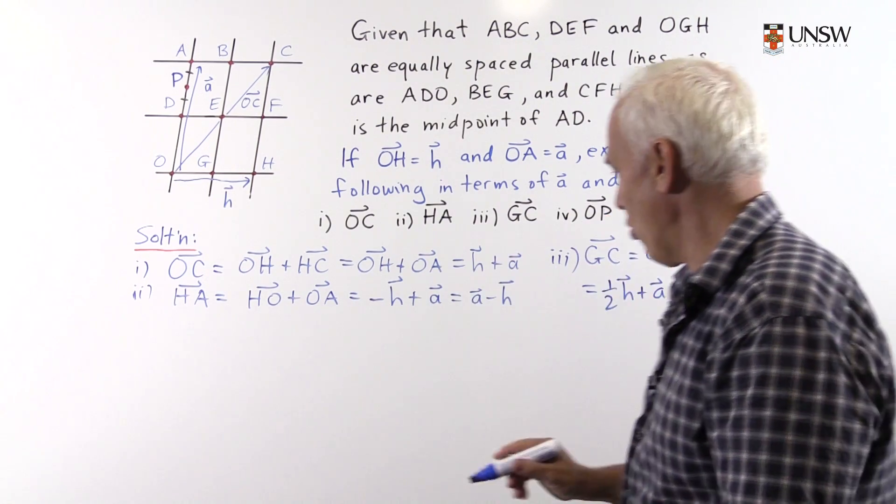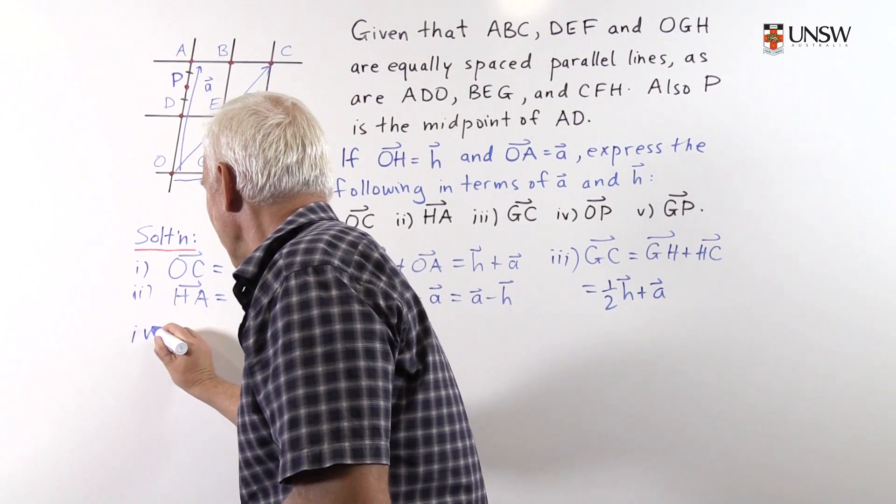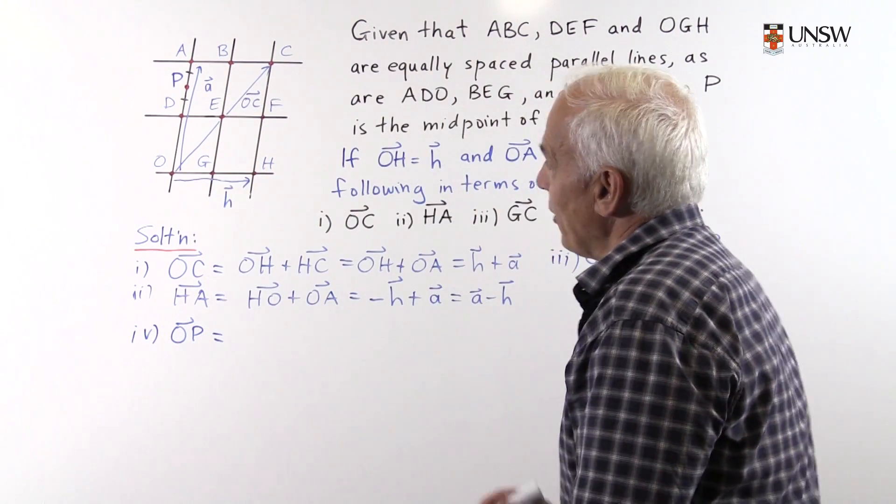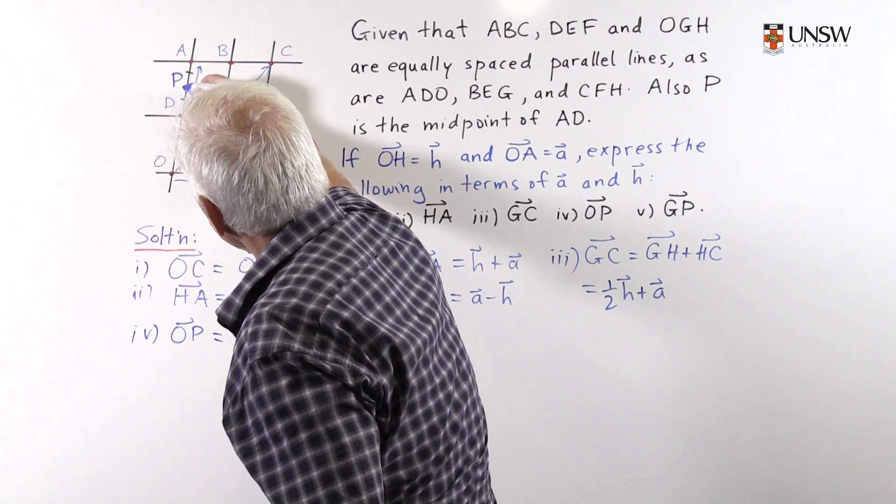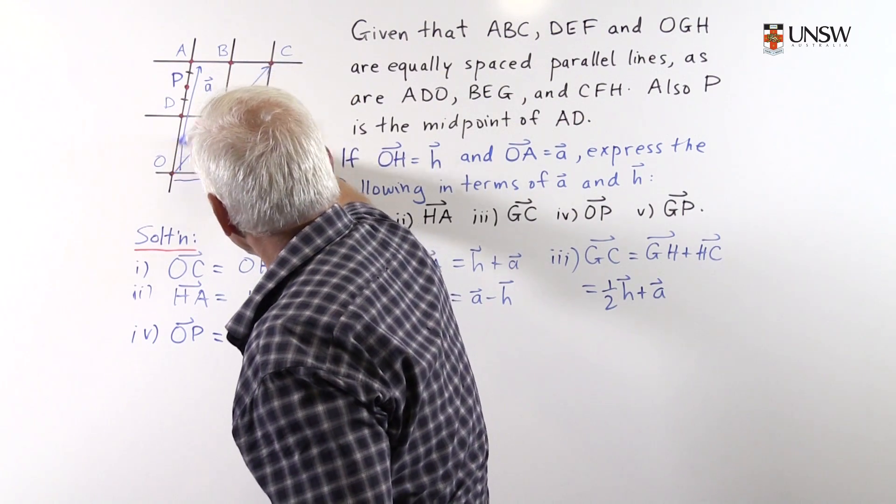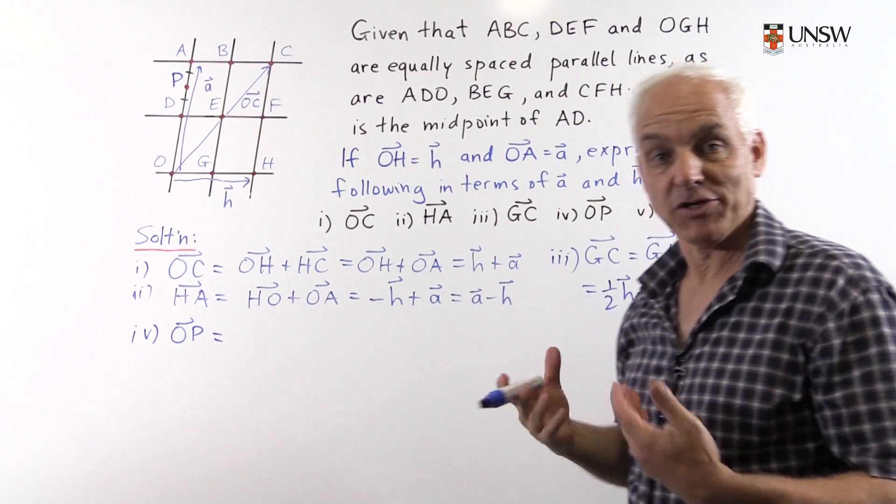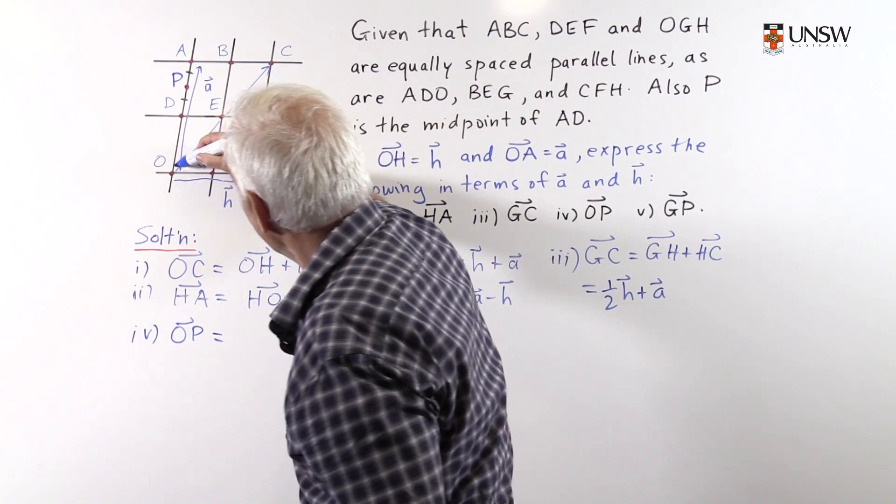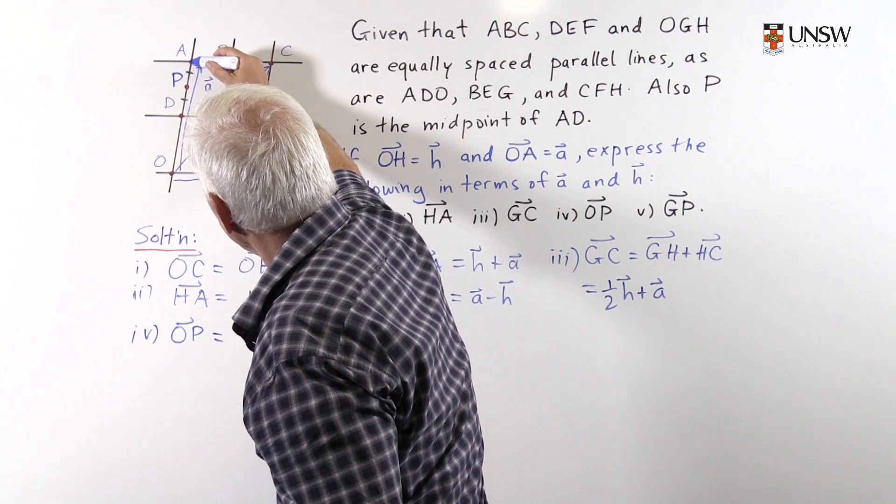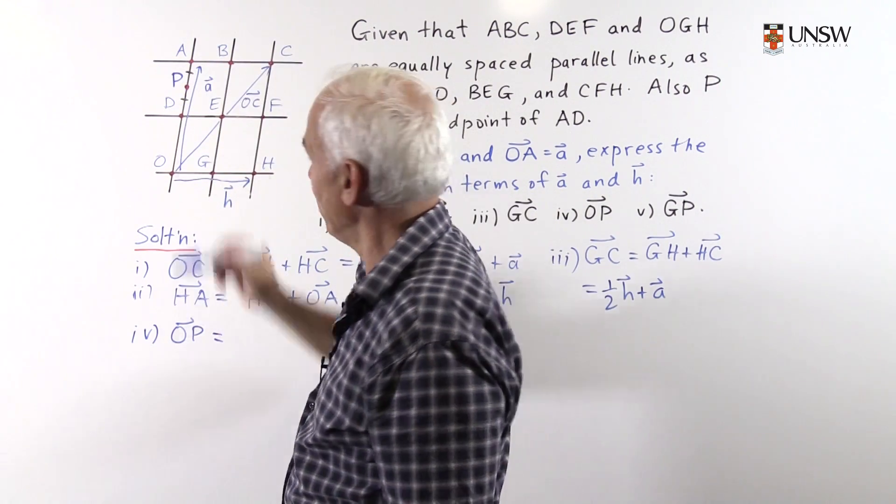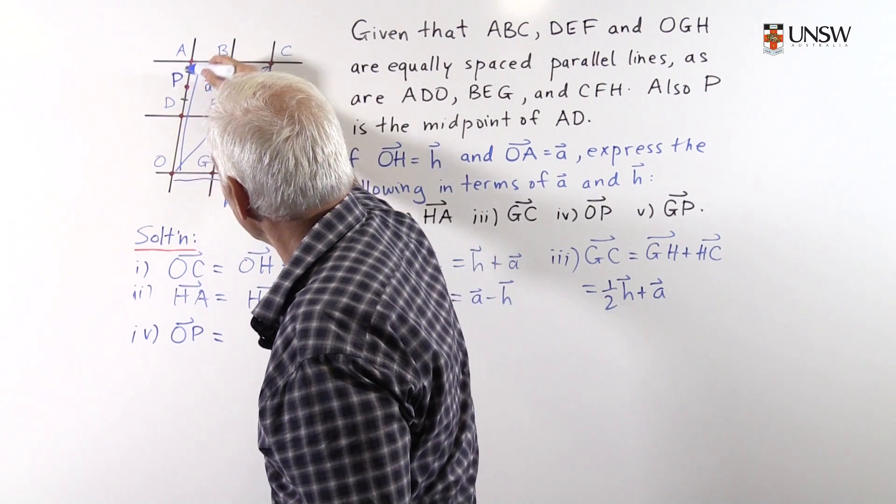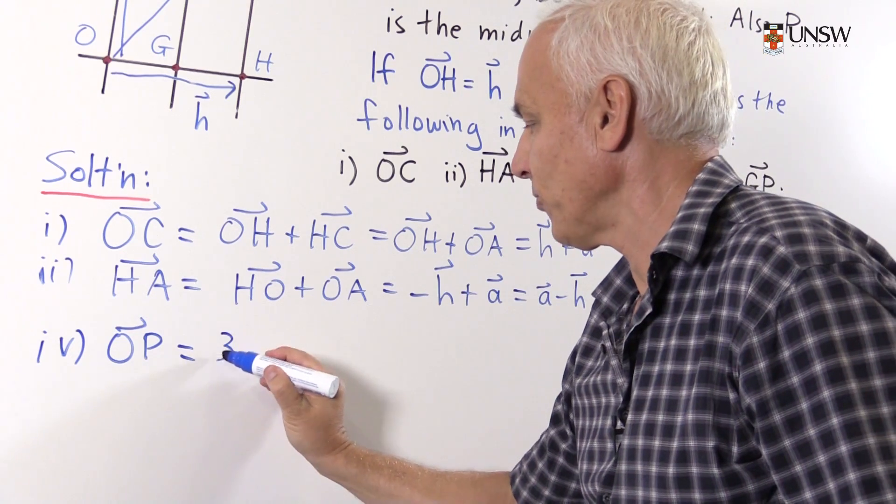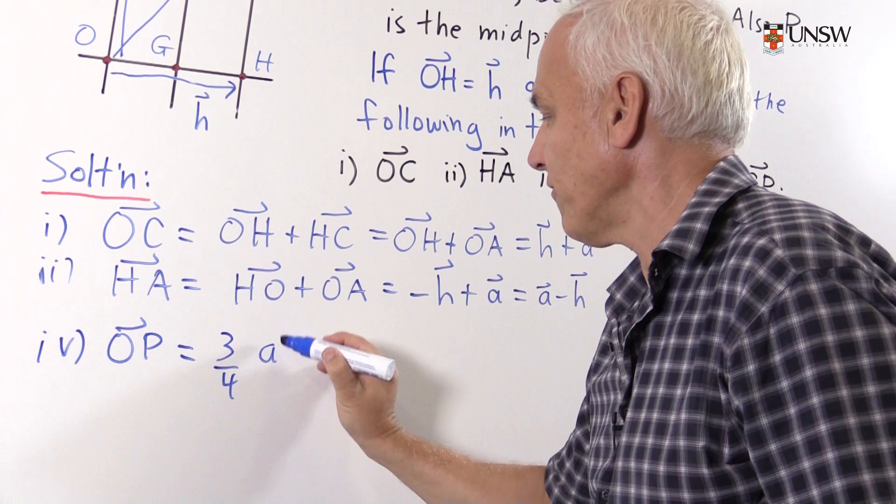How about OP? OK, so this is the vector from here to here. It's certainly in the direction of A, so we expect it to be a multiple of A. And these are equally spaced. And this is exactly halfway there. So altogether this is three quarters of the way to A. So it's three quarters of the vector A.